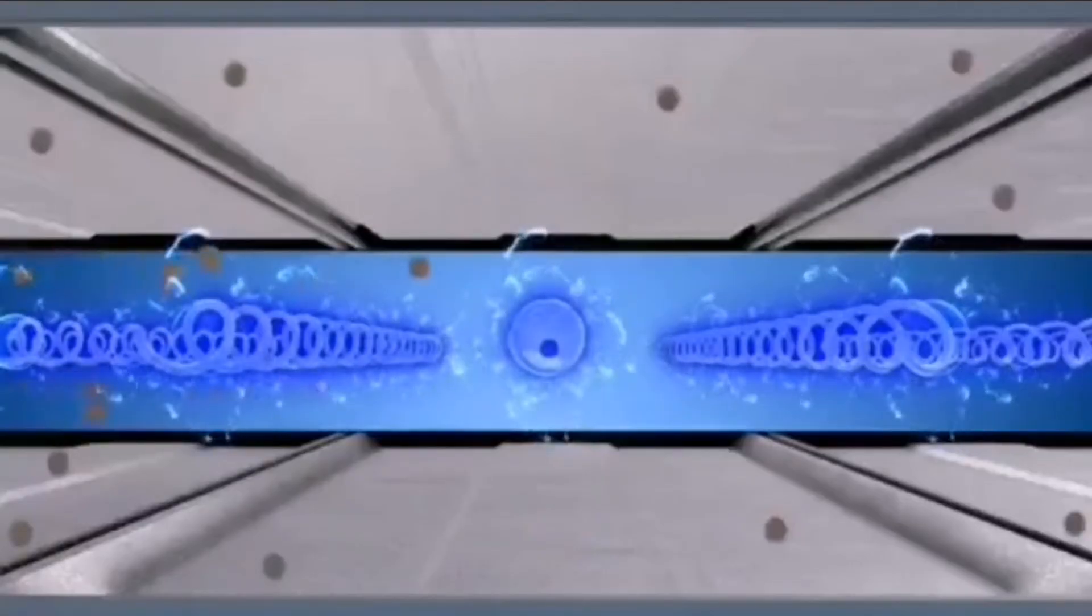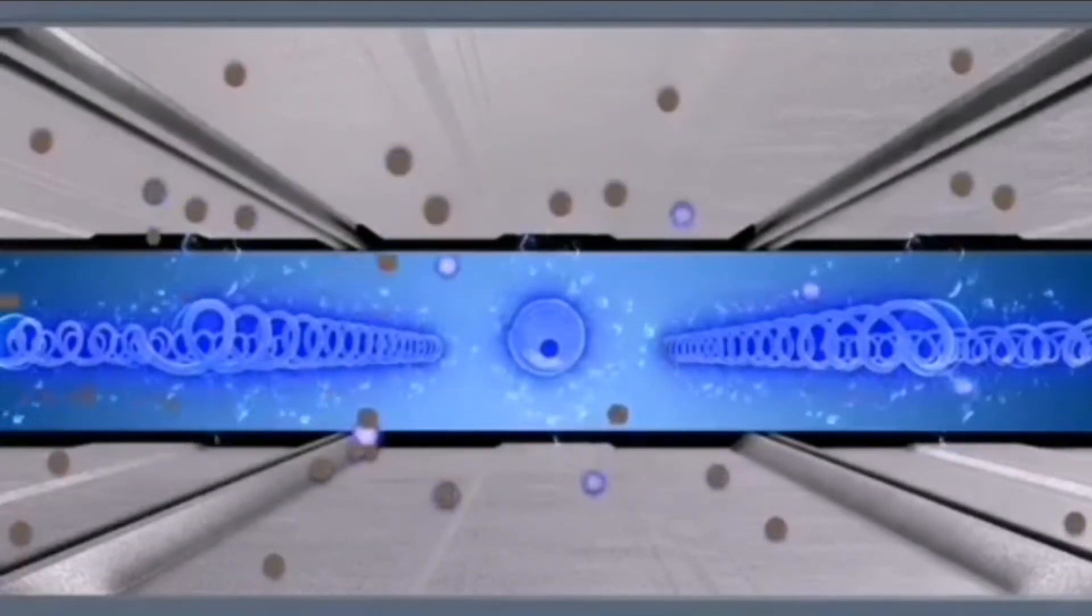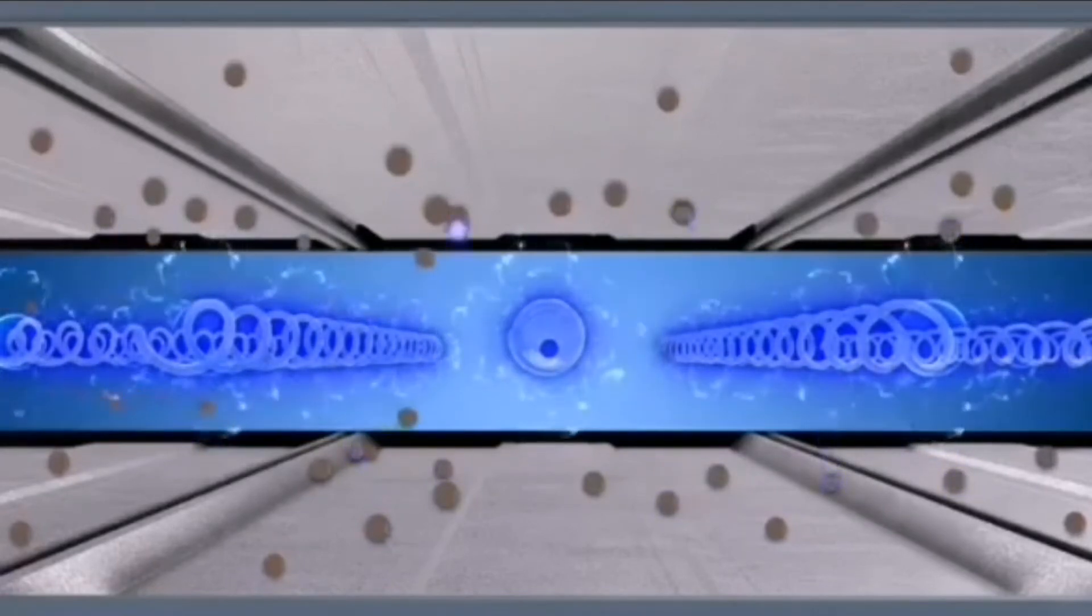The entrained particles are given an electrical charge when they pass through the high voltage electric field. This forces the charged particles to migrate towards the collecting electrodes.